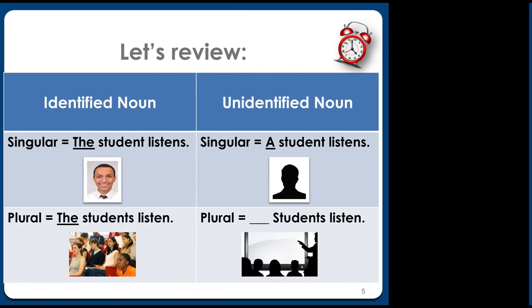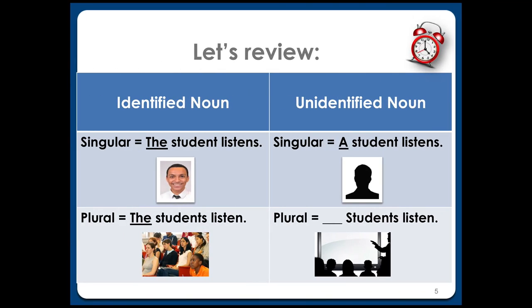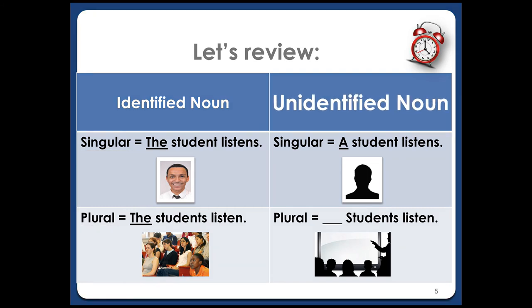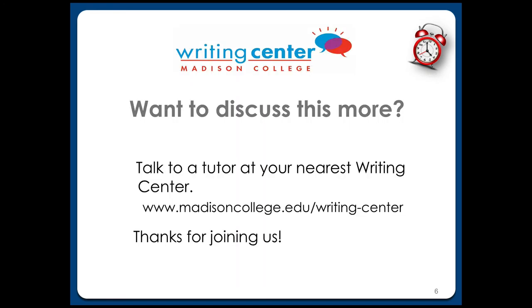This is a lot of information in a short amount of time, so let's review. If you've decided that you have an identified noun, you'll always use 'the' in front of it, whether the noun is singular or plural. But if your noun is unidentified and singular, use 'a' or 'an.' When it's plural, don't use any article at all. Of course, you can always talk with someone about using articles by meeting with someone in your nearest writing center.